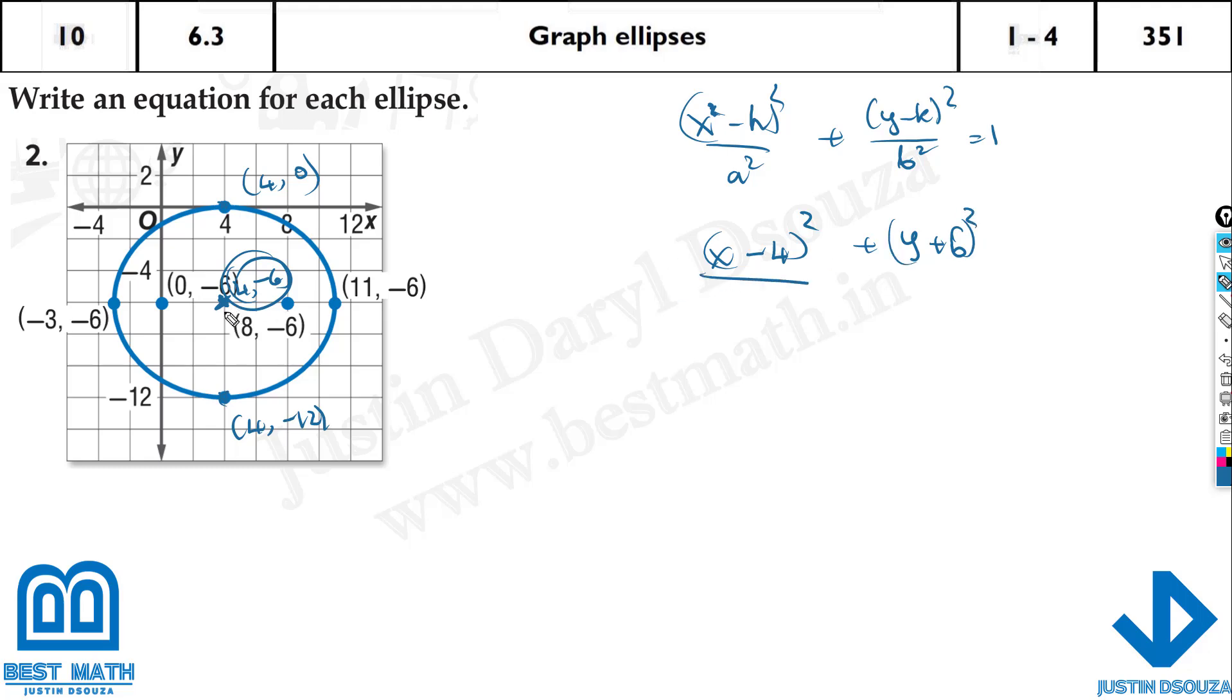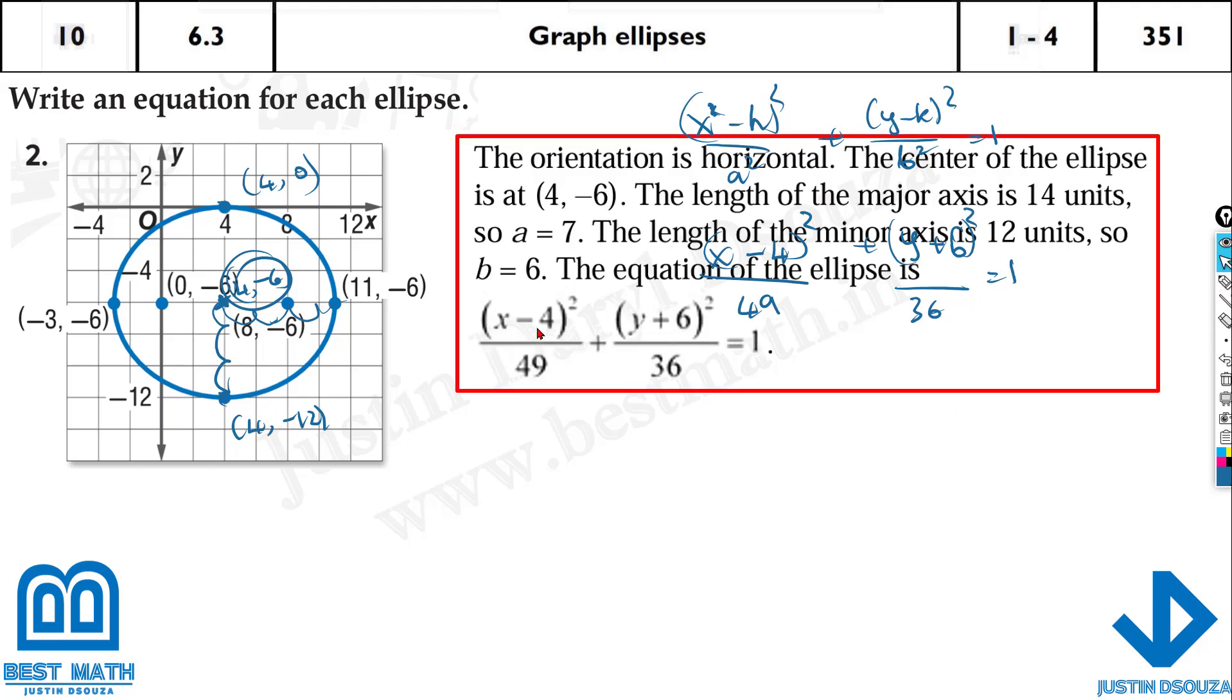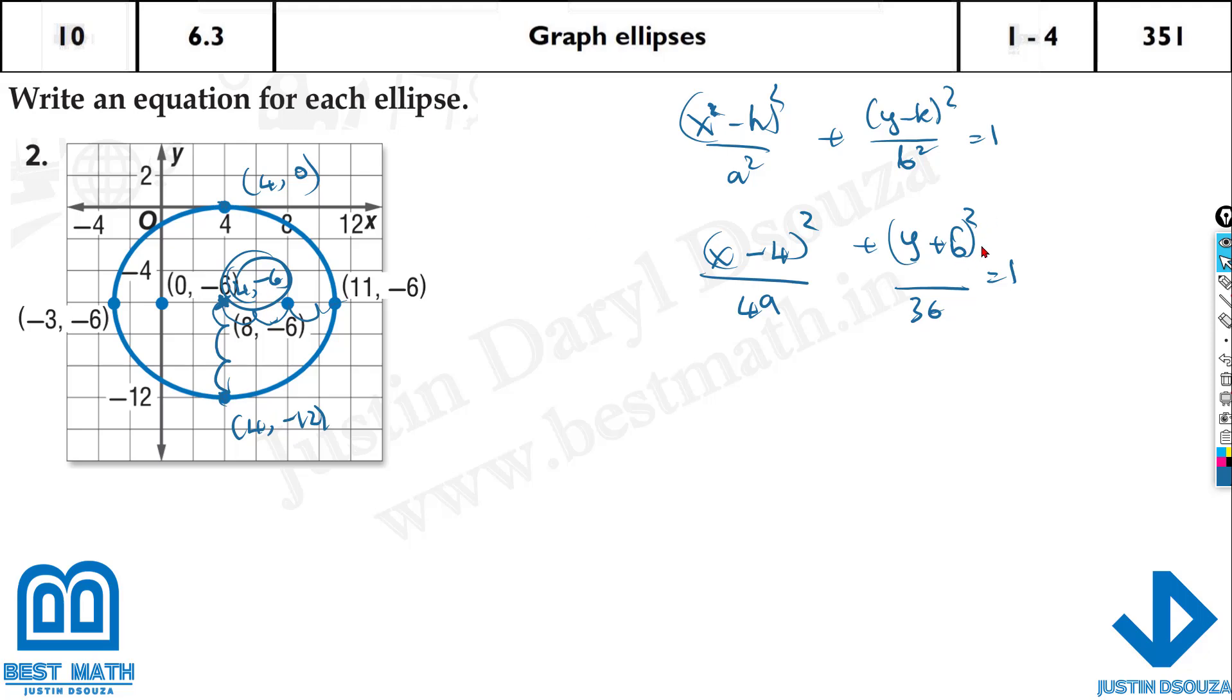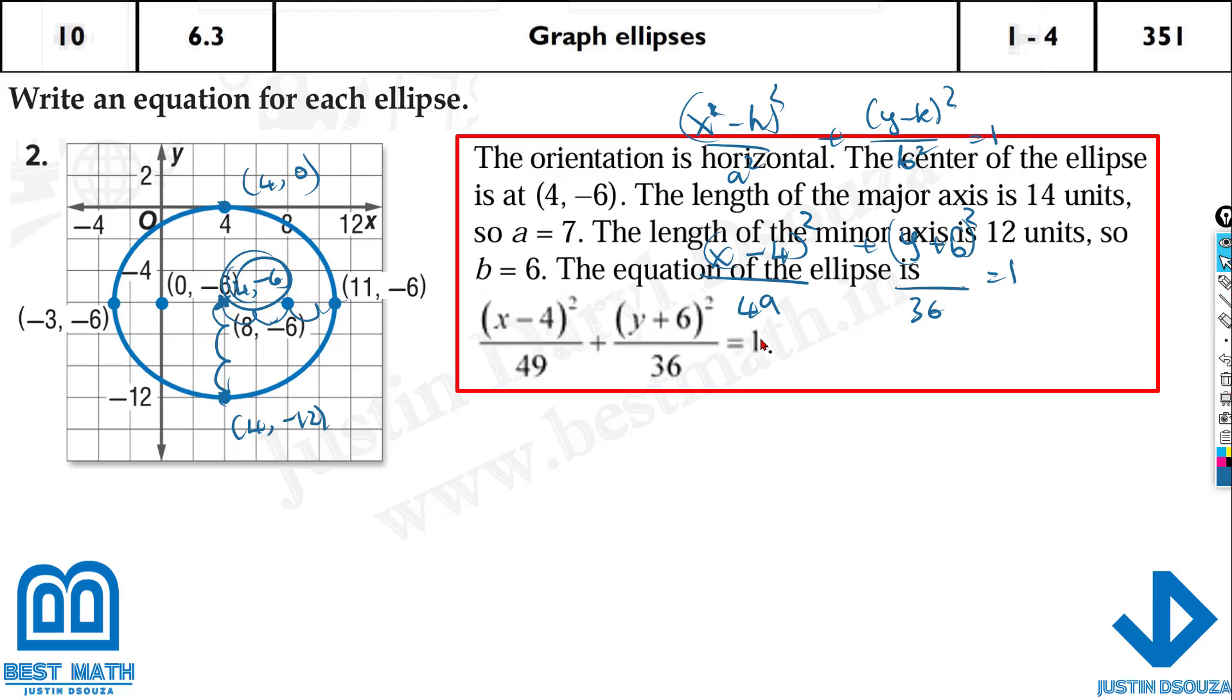Divided by, what is a value now? You just have to count till the vertex. It's 2, 4, 6, 7. 7 squared is 49. Divided by, what is the co-vertex? It's 2, 4, 6. That is 36 equals 1. That's the answer. So here we should have (x - 4)² / 49 plus (y + 6)² / 36 equals 1.